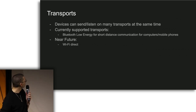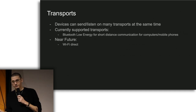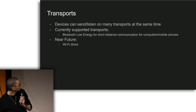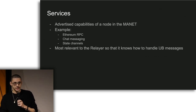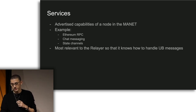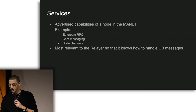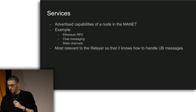Currently we're supporting BLE for short distance communication, which works for computers and mobile phones — we've done examples with multiple Macs, iPhones, and Android phones connecting, forwarding, and broadcasting messages. Services are those advertised capabilities of a node in a MANET, such as Ethereum RPC, chat messaging, or a generic state channel interface. The relayer is a special kind of node that knows how to handle UB messages — for example, broadcasting an Ethereum transaction to the Ethereum network — and is usually a laptop connected to some internet endpoint.